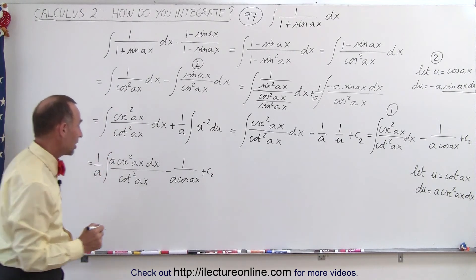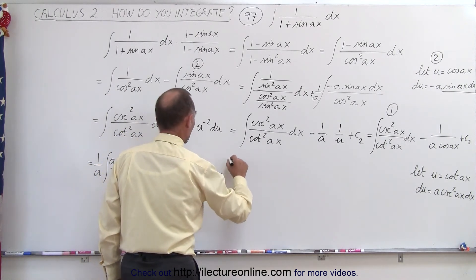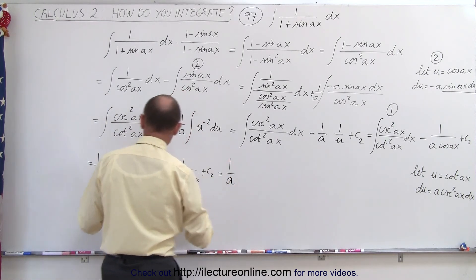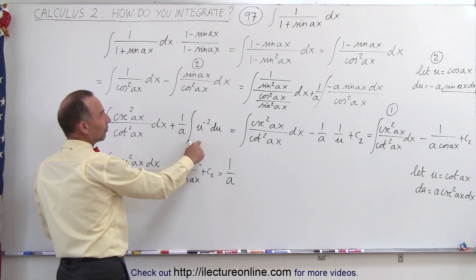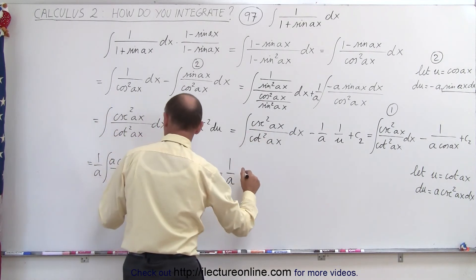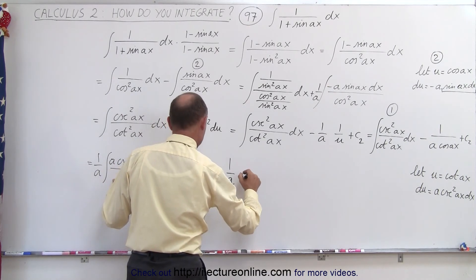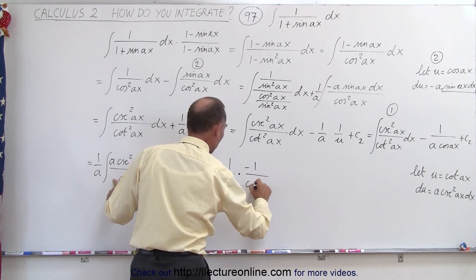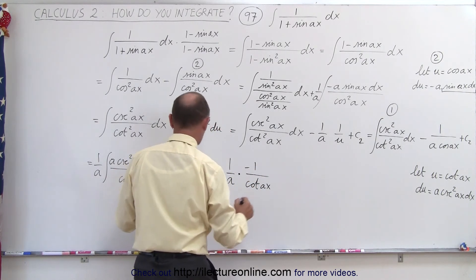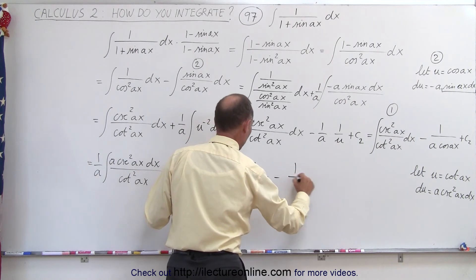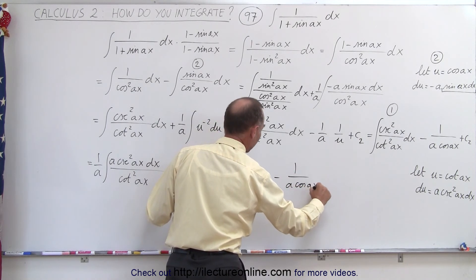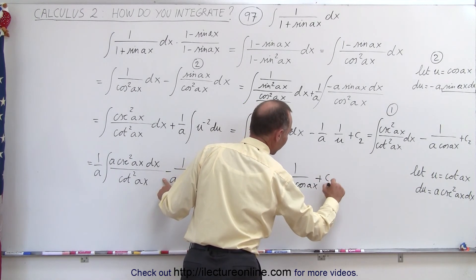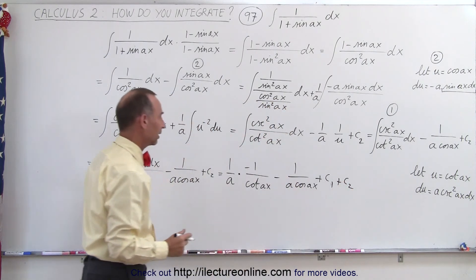We're now ready to integrate the first integral. Integrating u to the negative 2 introduces a negative, so this becomes 1 over a times negative, giving us negative times negative 1 over the cotangent of Ax, minus 1 over a times the cosine of Ax, plus the constant of integration for the first integral and the constant of integration for the second integral.